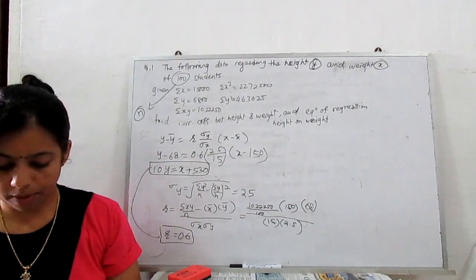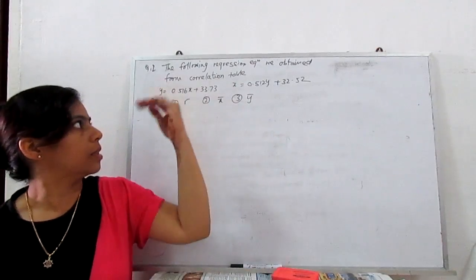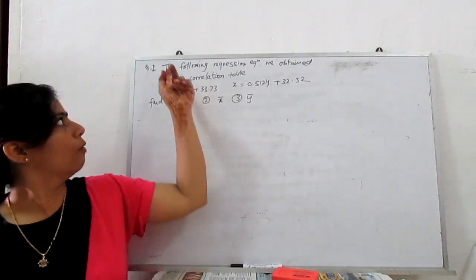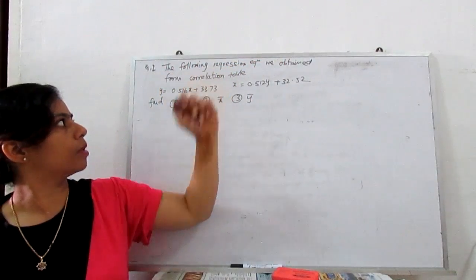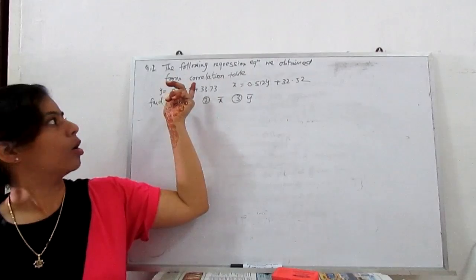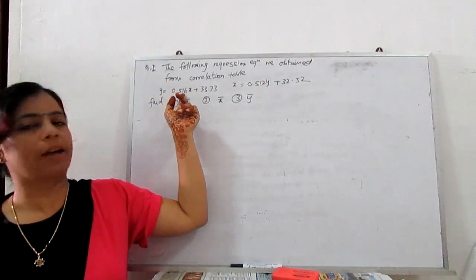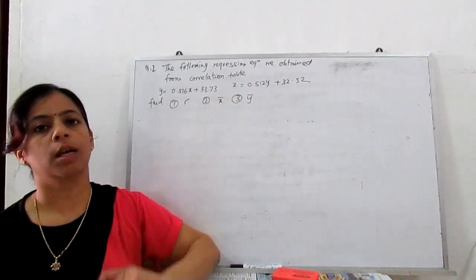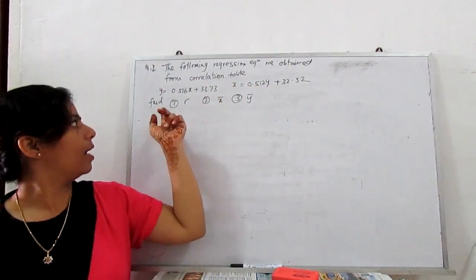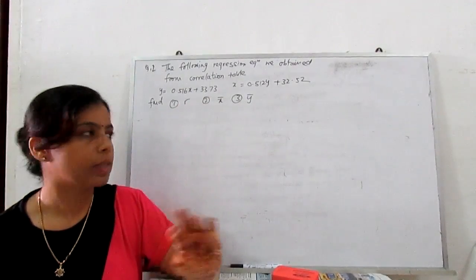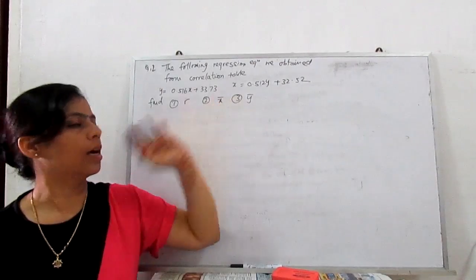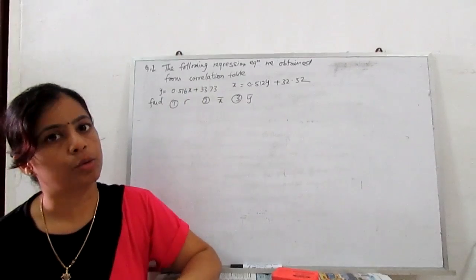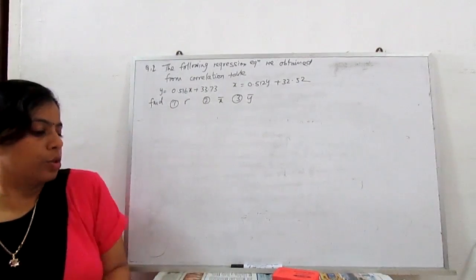Example 2 — the reverse process: given two regression equations from a correlation table, find r, x̄, and ȳ. The regression line y on x is: y = 0.516x + 33.73. The regression line x on y is given as another equation. We are asked to find: (1) the correlation coefficient R, (2) the mean of x (x̄), and (3) the mean of y (ȳ).